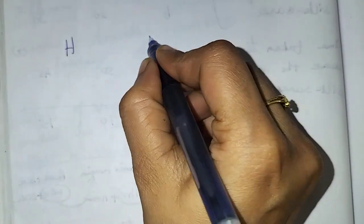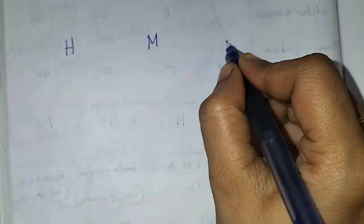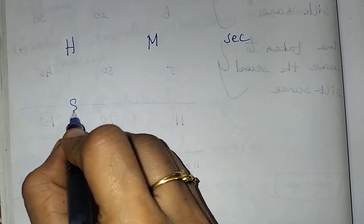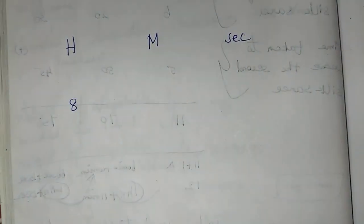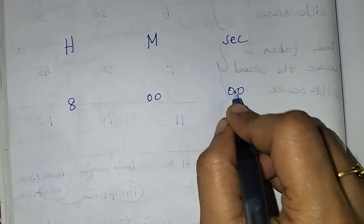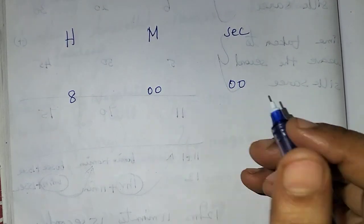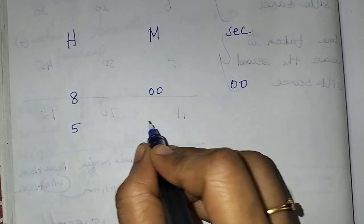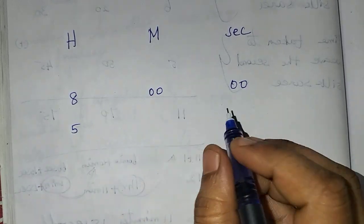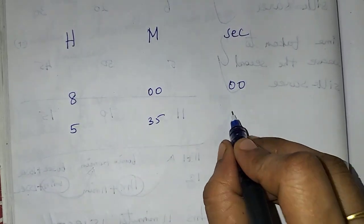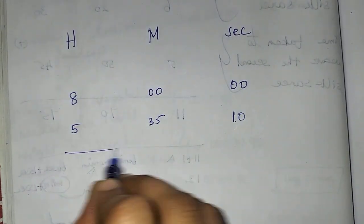So we set up our columns: hours, minutes, seconds. We place 8 hours on top and 5 hours, 35 minutes, 10 seconds below it.